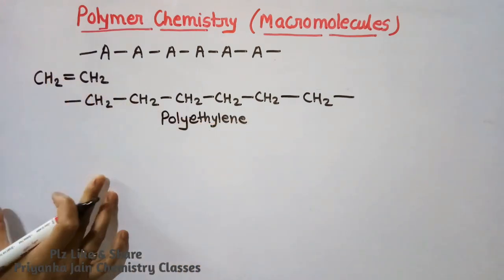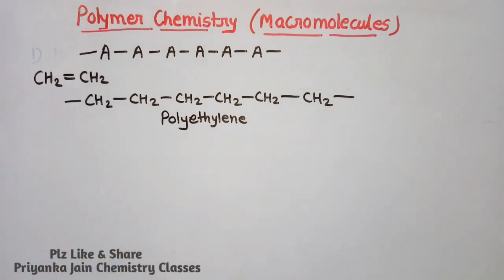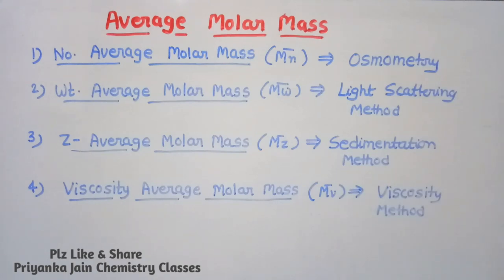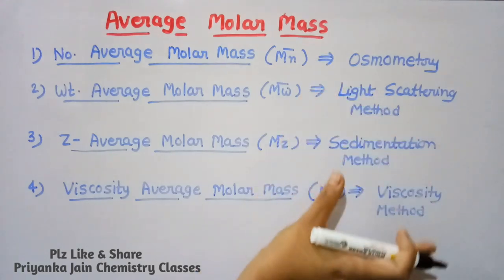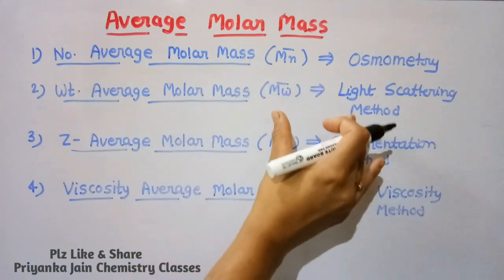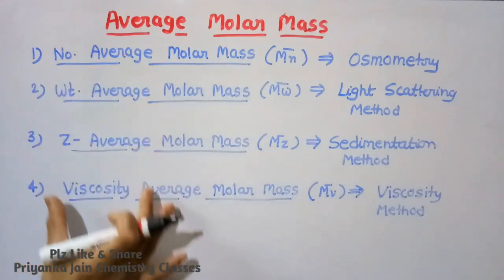Now we are considering the average molecular weight of polymers. We study average molar masses because during polymerization we get polymer chains of different lengths — some chains have n monomer units, some n+1 or n+2, etc. So we get chains of different molecular weights. Since molecular weights are determined by different methods, what we find is an average; hence we take average molecular weights.